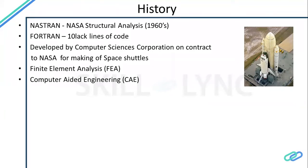So they decided to develop their own tool. They gave a contract to Computer Science Corporation, a leading software company in the USA at the time in the 1960s. They collaborated with NASA — the architecture of NASTRAN was defined by NASA scientists, while all the programming was done by Computer Science Corporation. It is a Fortran program with 10 lakh lines of code — a huge program.